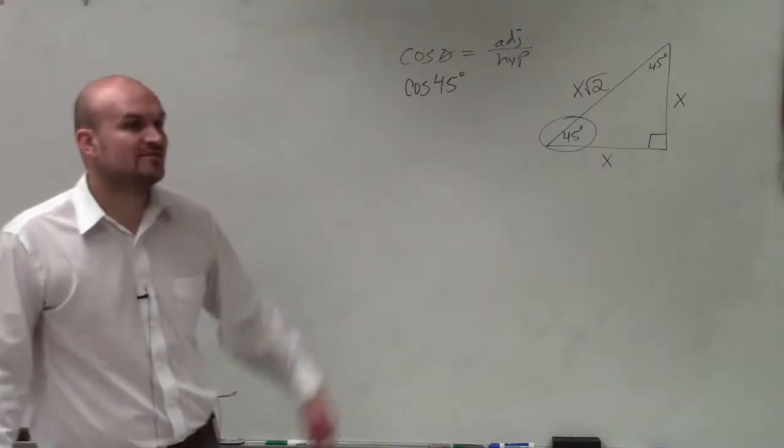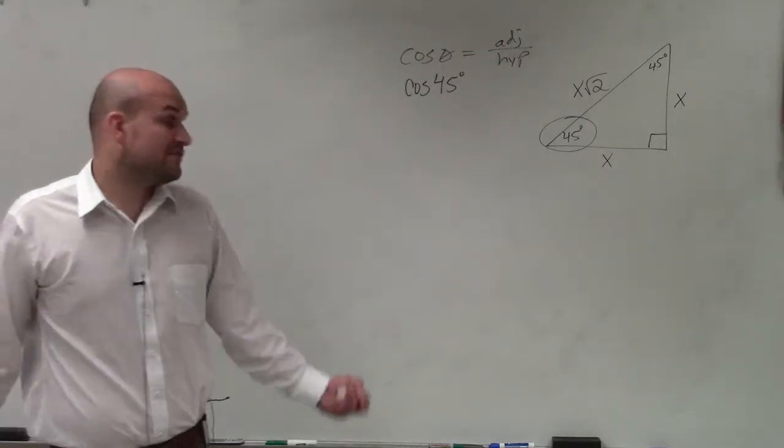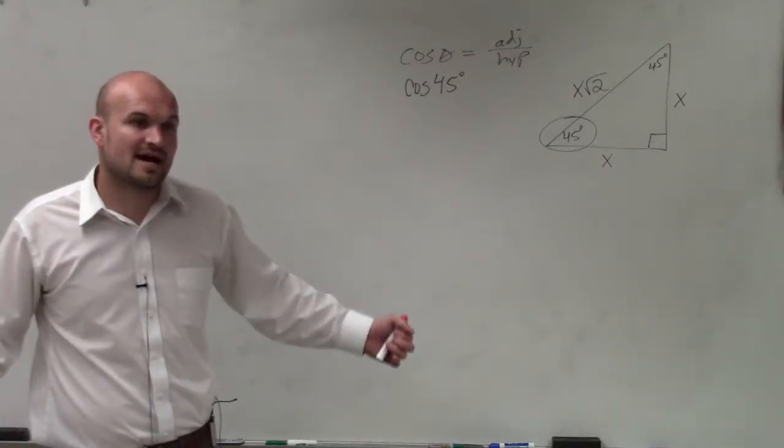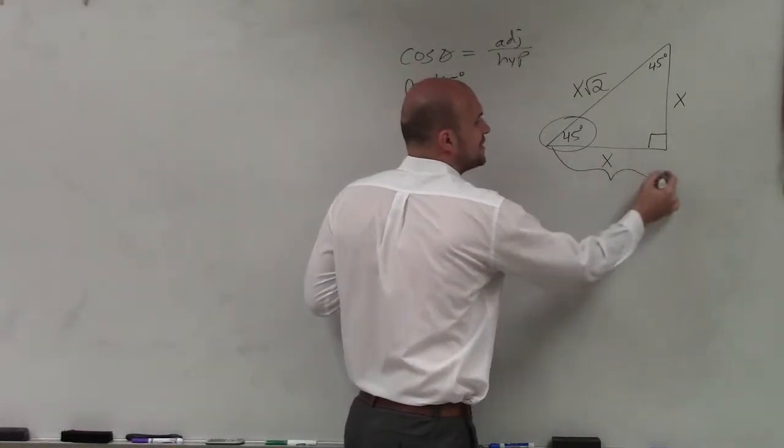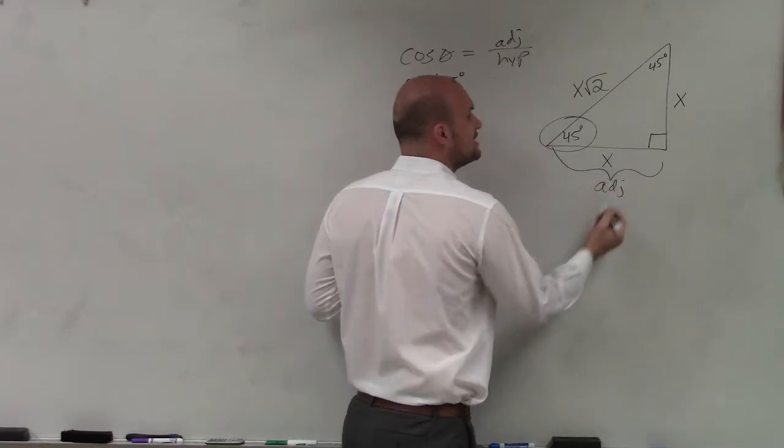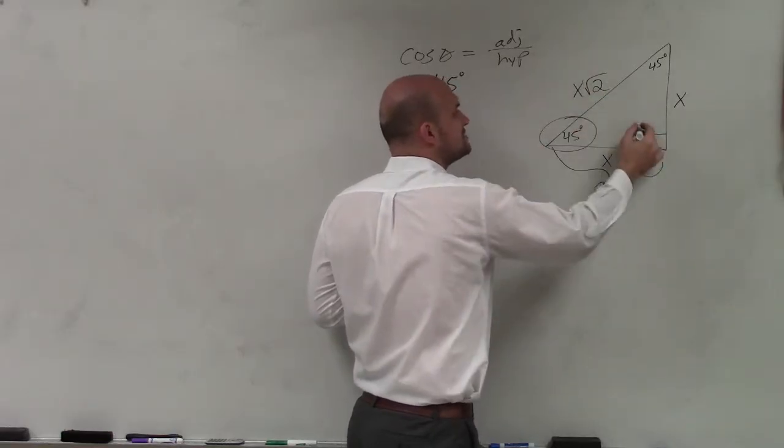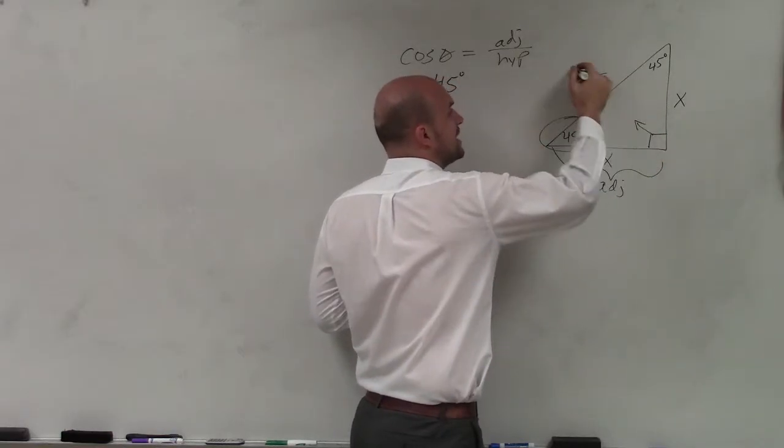So from the 45-degree angle that I circled, I need to figure out what is my adjacent side and what is my hypotenuse. The adjacent side, remember, is always between your angle and the 90-degree angle. And your hypotenuse is always directly across from your 90-degree angle.